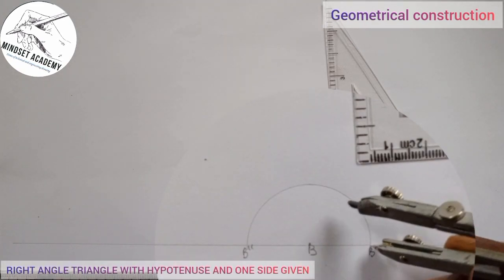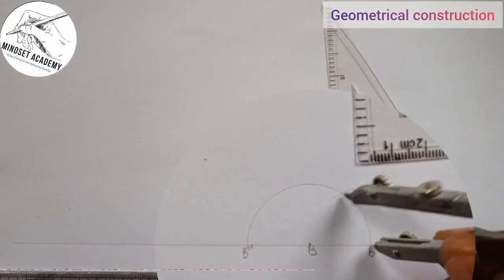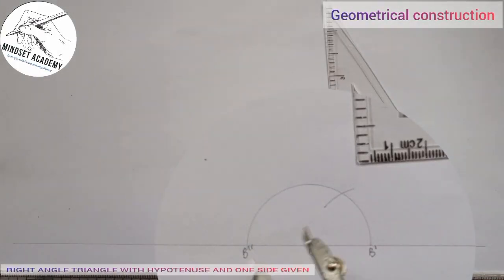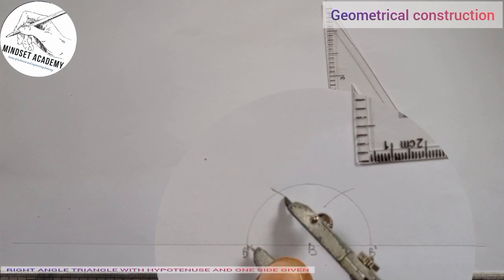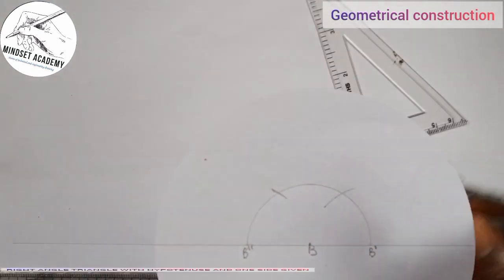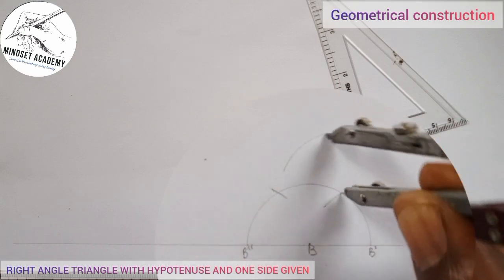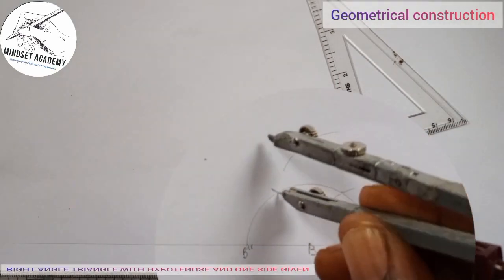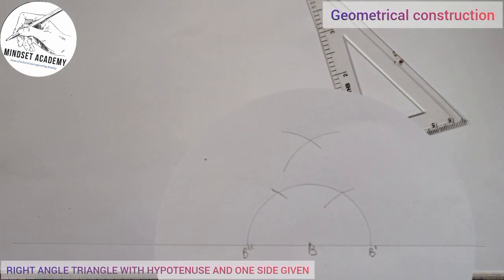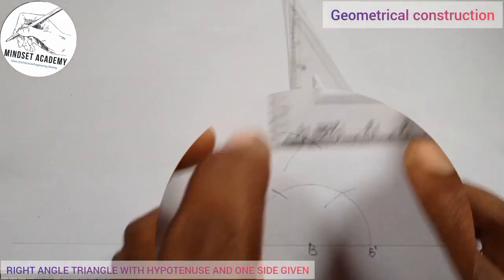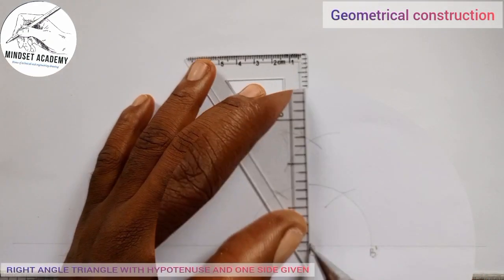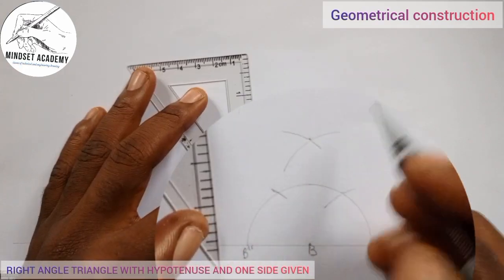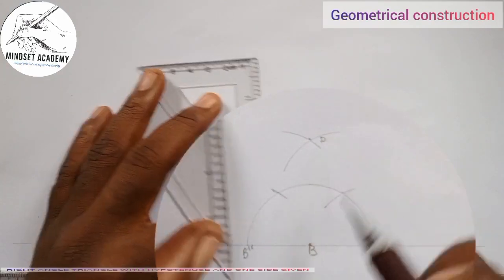I'll place it at B prime and strike an arc in this manner. I'll place it at B prime prime and strike another arc. With the same radius, I'll place it at this point and cut, then place at this point and also cut. From that point, that will be where my perpendicular line will be. At this point where they meet, I'll call it point D.